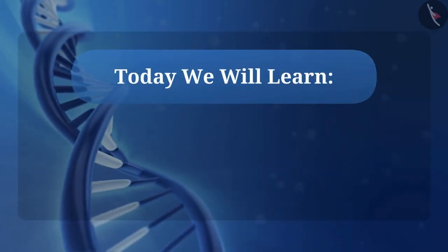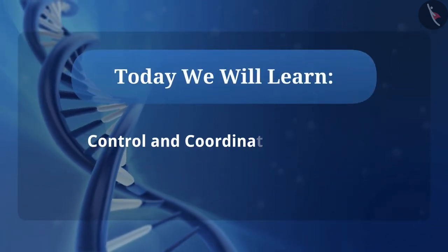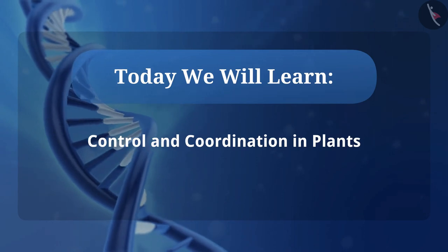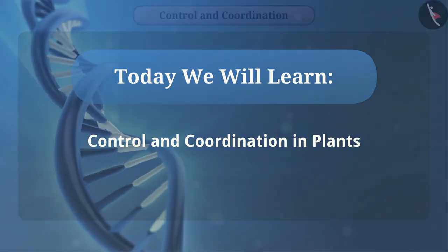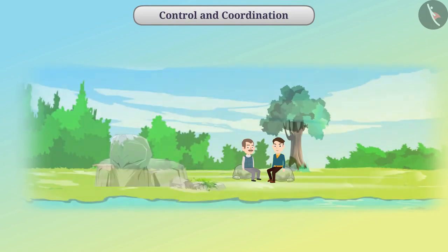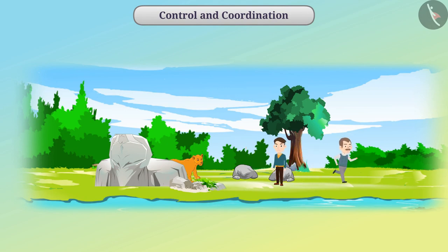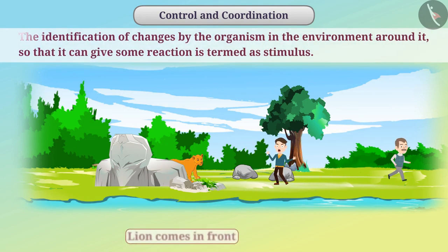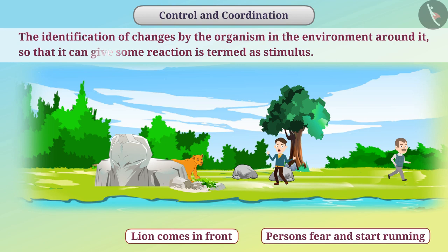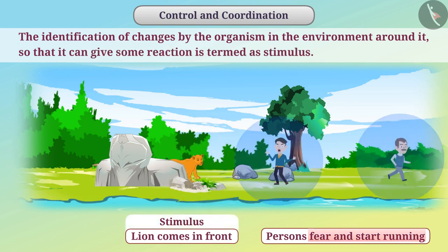Today we will learn about control and coordination in plants. Each organism identifies the changes occurring around it and responds based on these changes. The identification of changes by the organism in the environment around it so that it can give some reaction is termed as stimulus. The reaction given to the stimulus is called the response.